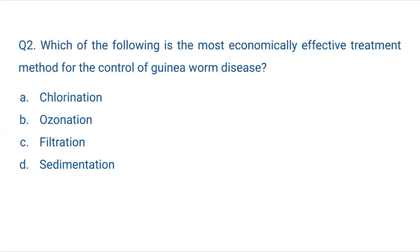Question 2: Which of the following is the most economically effective treatment method for the control of guinea worm disease? Guinea worm disease is a pathogenic disease. Options are: A. Chlorination, B. Ozonation, C. Filtration, or D. Sedimentation.